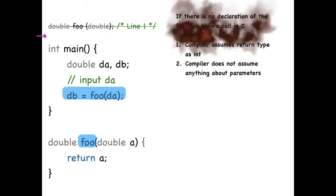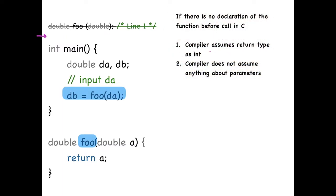In this case, the compiler assumes the return type as int and the compiler does not assume anything about parameters. So this is the expectation of the compiler.